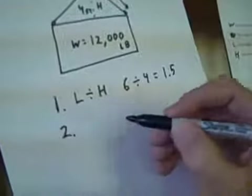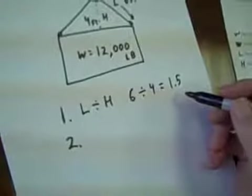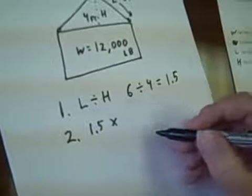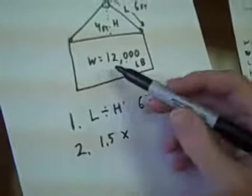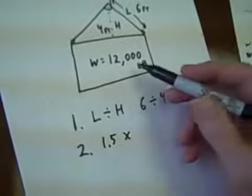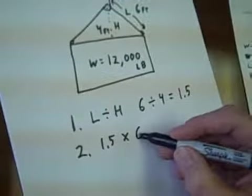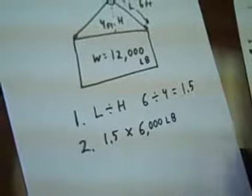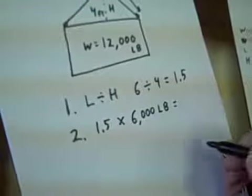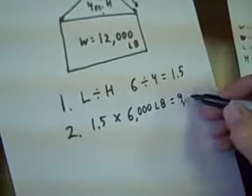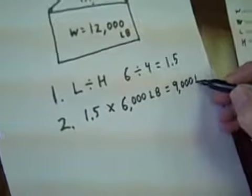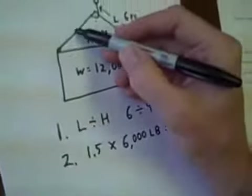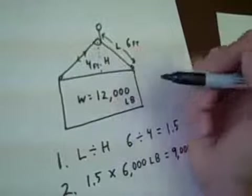The second step was to take that answer, one point five, and multiply it times half of the weight. Twelve thousand, half of that is going to be six thousand pounds. And the answer to that is nine thousand pounds. That is the force exerted on each of these slings when you would be making this lift.